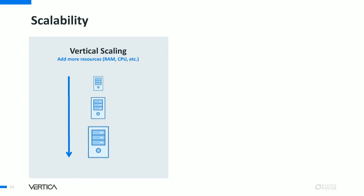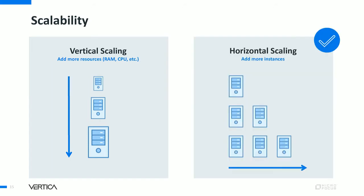For scalability, you have two main options. Vertical scaling means adding more RAM and CPU to a single machine, but there's a limit in both cost and technology. The better solution is horizontal scaling, where you keep adding more instances for more computing power and capacity. This creates a supercomputer that stitches together several nodes, distributing workloads across them for massively parallel processing and really fast speeds.